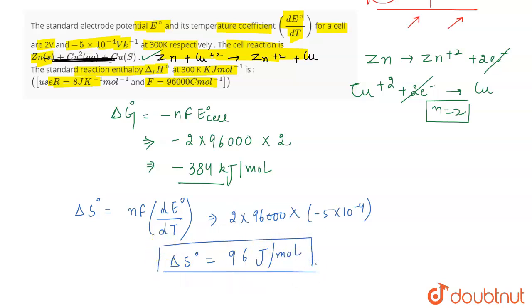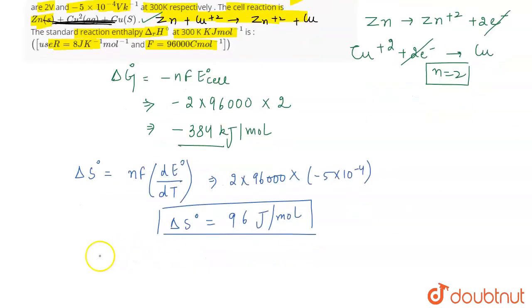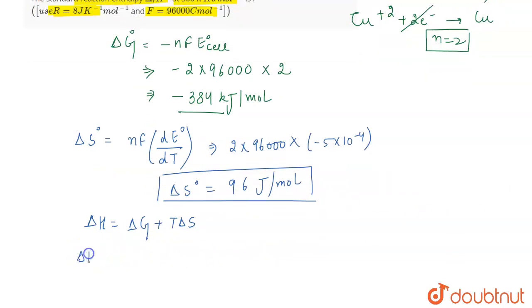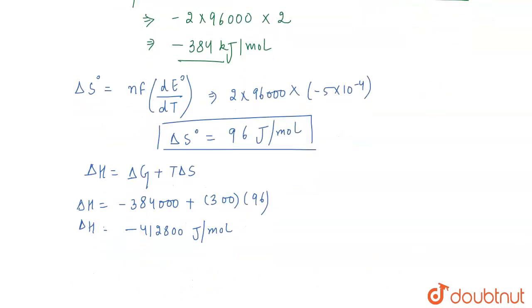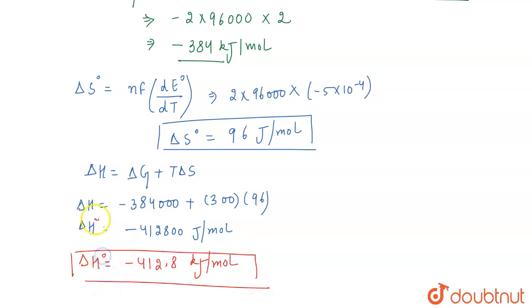Now calculating ΔH°: ΔH° = ΔG° + TΔS°. Converting ΔG° to joules gives -384,000 J/mol. With T = 300 K and ΔS° = -96 J/mol·K, ΔH° = -384,000 + 300×(-96) = -412,800 joule per mole, which is approximately -412.8 kilojoule per mole. This is the final answer.